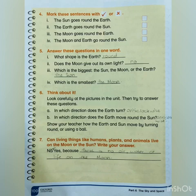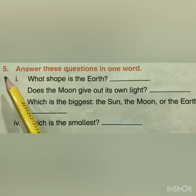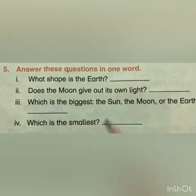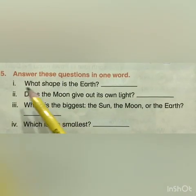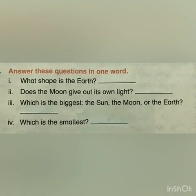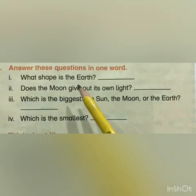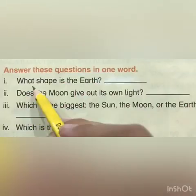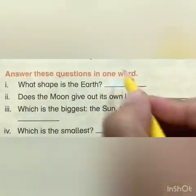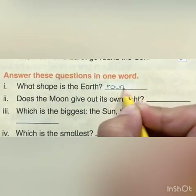Assalamu alaikum, my little kids. Today we are going to start with page number 100 of unit 11: The Earth, the Sun, the Moon, and the Stars. Number five — answer these questions in one word. Number one: what shape is the Earth? Do you remember, in our previous videos we discussed the shape of the Earth. The answer is round. Write: R-O-U-N-D, round.